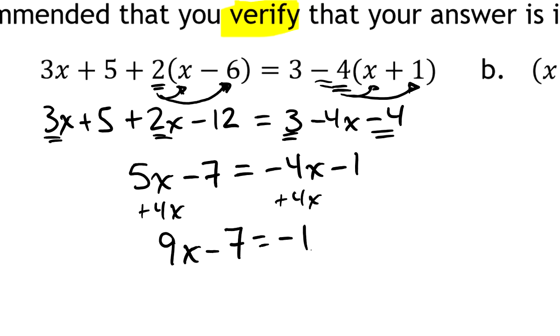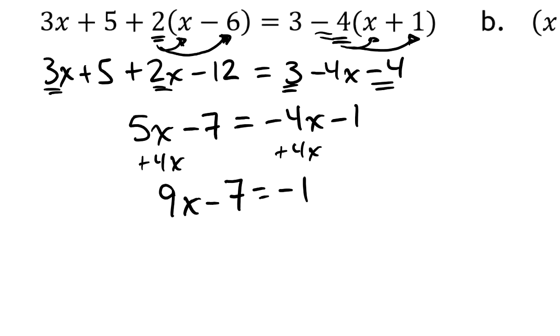So when I do that, over on the left-hand side, I end up with 9Xs minus 7. Nope, not minus 9, minus 7. And that will equal negative 1 on the other side. And then I am going to add 7 to both sides.